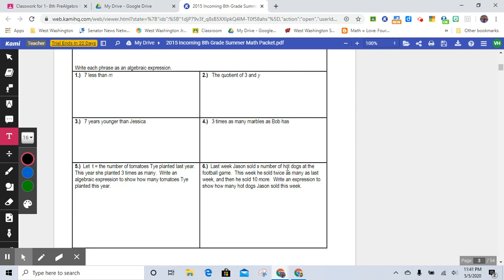Jason sold a certain number of hot dogs last week. This week he sold twice as many, and then 10 more. Write an expression to show how many hot dogs he sold altogether. This has two steps to it, right? Because it's twice as many, and then 10 more. So make sure that this has two steps to it.